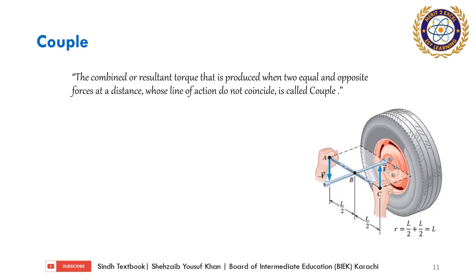Now, couple is about two torques. A couple is made of two forces that are equal but in opposite directions. These are unlike parallel forces — if we apply like parallel forces, a couple will not be produced; but if we apply unlike parallel forces (one in one direction and the other in the opposite direction), a couple is produced. The couple is the resultant torque of two forces, separated by a distance, whose lines of action are parallel but do not meet.